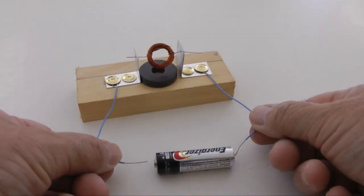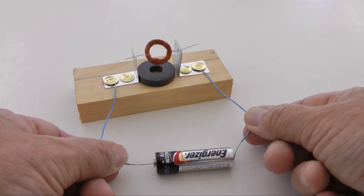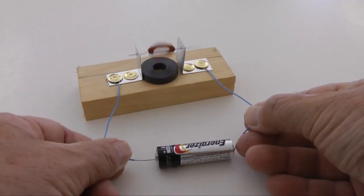Touching the leads to a single AA battery should cause the coil to bounce. If the coil is balanced and all electrical connections are completed, the motor should start.